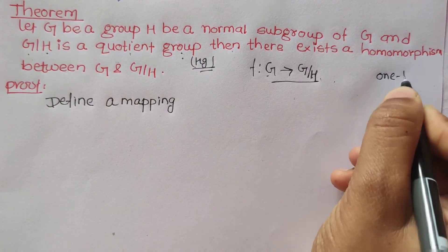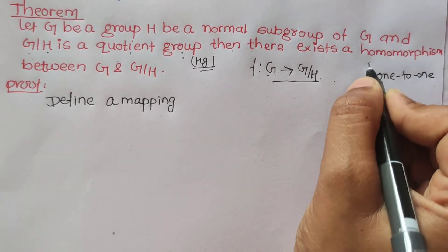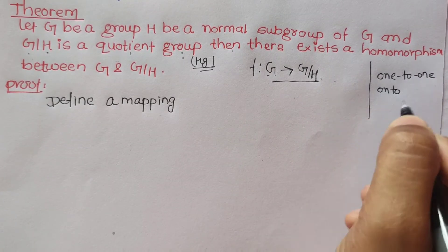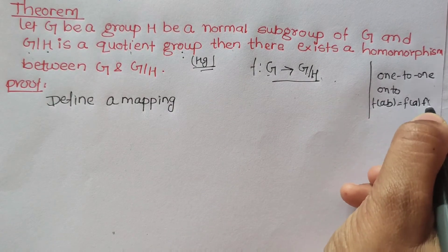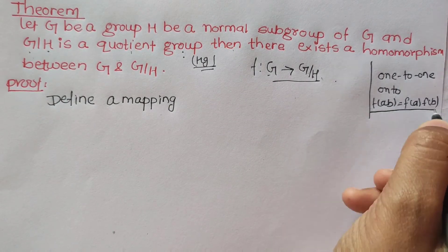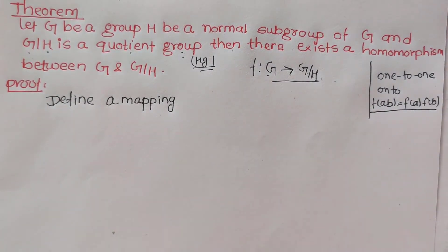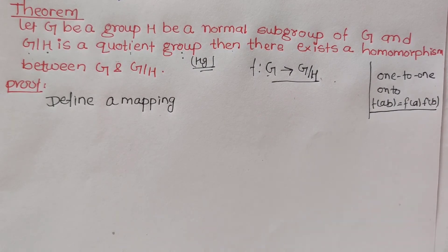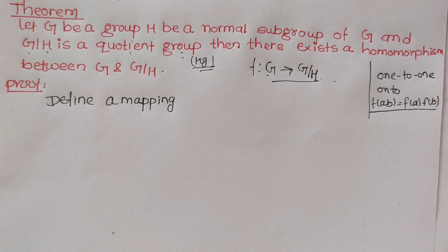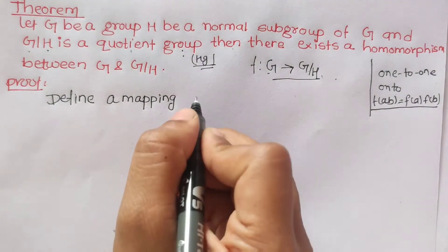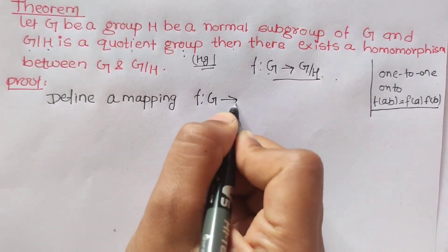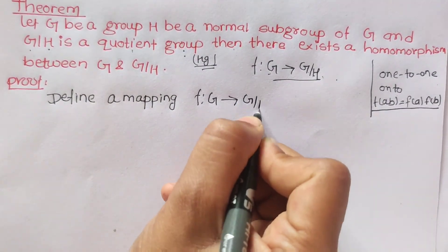First, I am going to show the mapping is well defined. Also we need to show f(ab) = f(a)·f(b) for the homomorphism property. So define a mapping f: G → G by H.